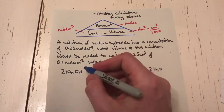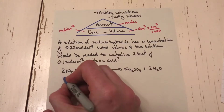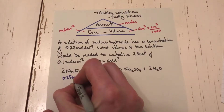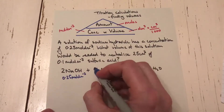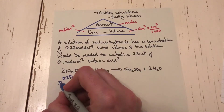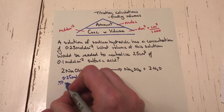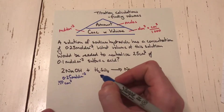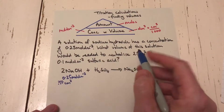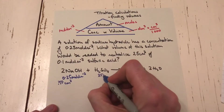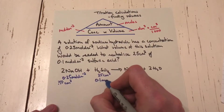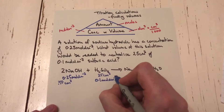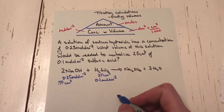The sodium hydroxide has a concentration of 0.25 mol/dm³ and its volume is unknown — that's what we need to find. The sulfuric acid is 25 cm³ at a concentration of 0.1 mol/dm³.